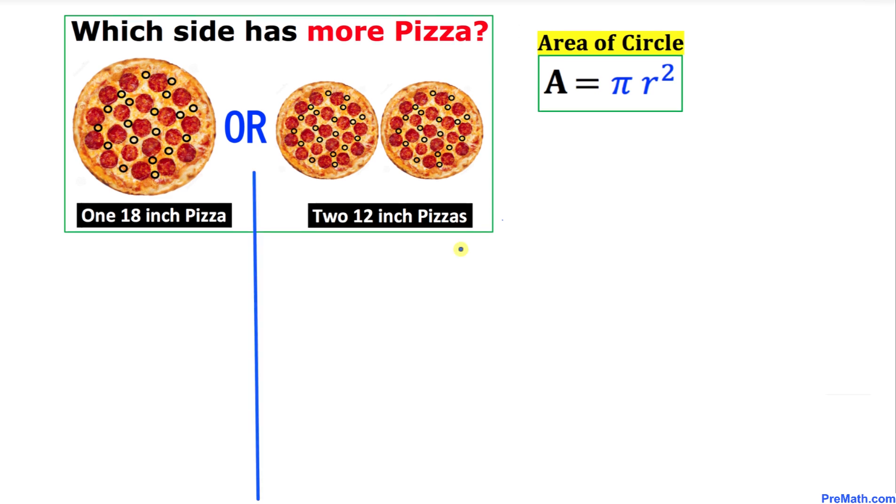Now we are going to do the comparison between these two options. Here, 18-inch pizza means that the diameter is 18 inches, and 12-inch pizza means the diameter is 12 inches. So for the first option, I'm going to write down: diameter is 18 inches.